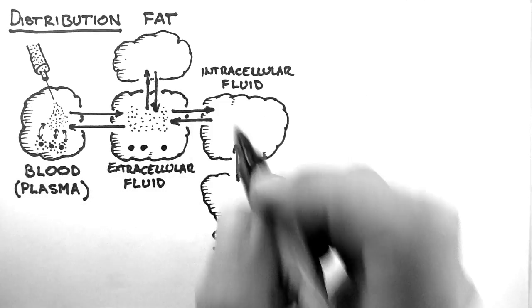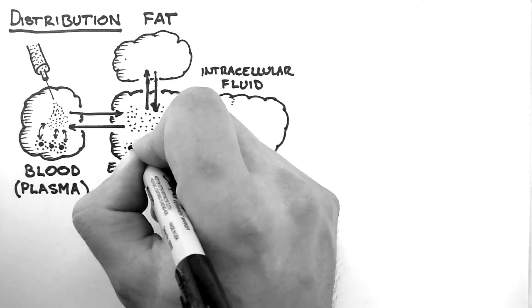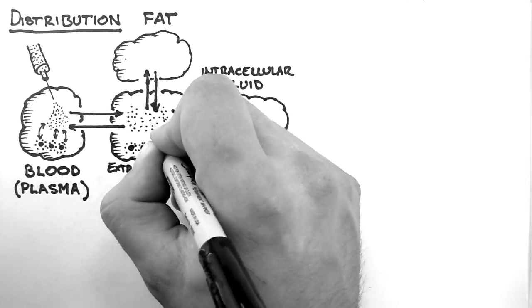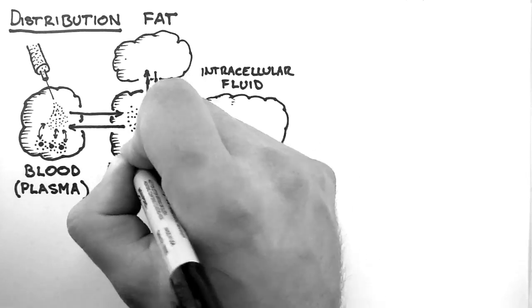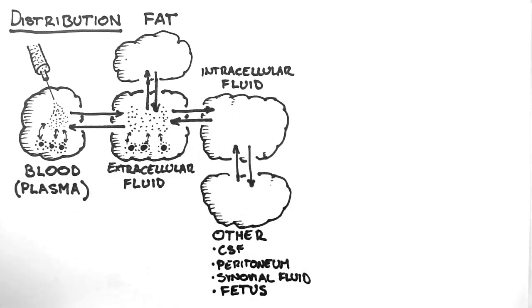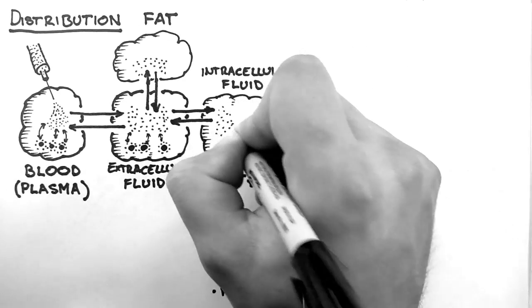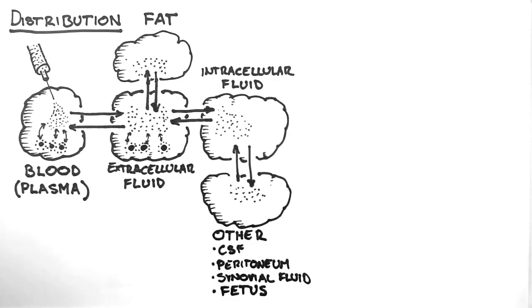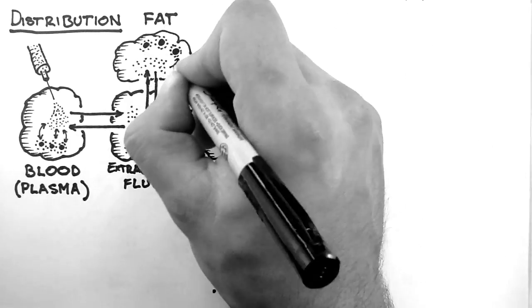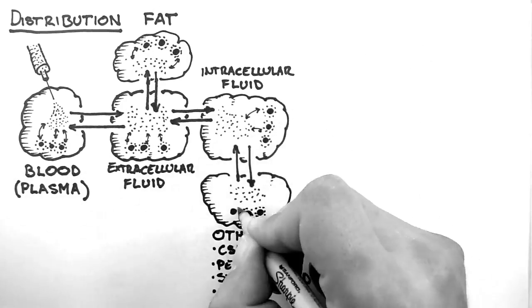When a drug moves into a new compartment, some of that drug is sequestered by binding molecules within that new compartment. This process continues until there is a balance between each compartment, and a balance between the amount of free drug versus bound drug within each compartment.